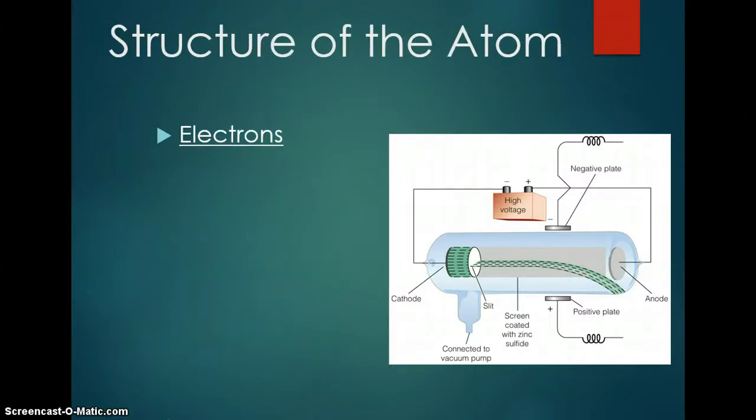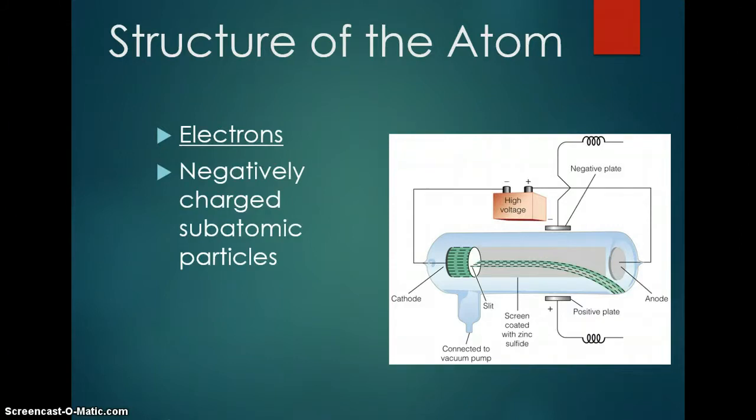Looking at the structure of the atom, the next thing that was discovered was electrons. They're negatively charged subatomic particles. They were discovered by J.J. Thomson, and he used this device called a cathode ray tube.